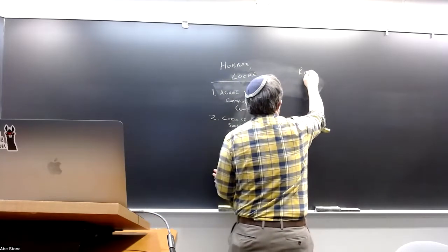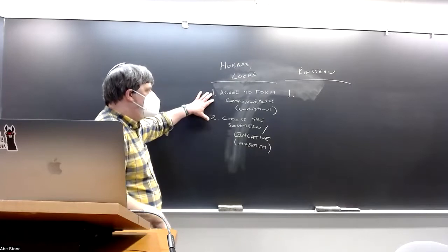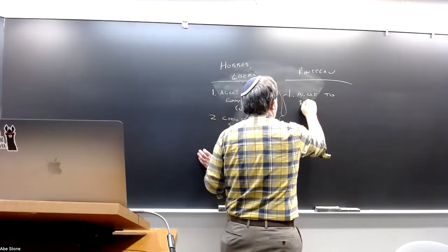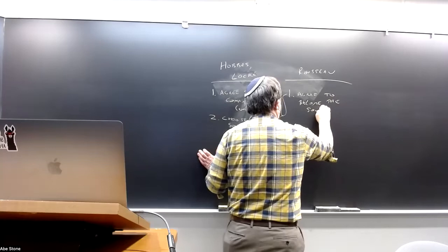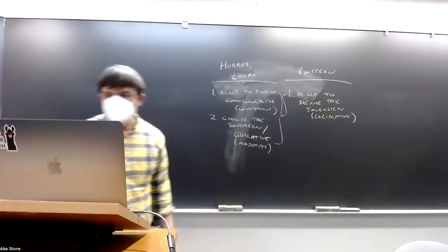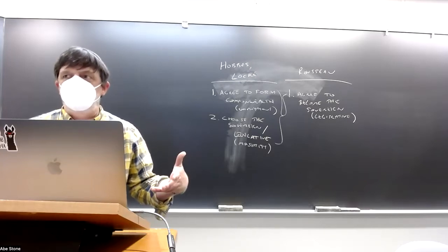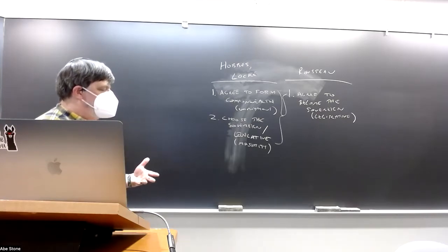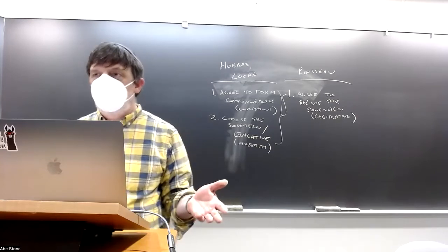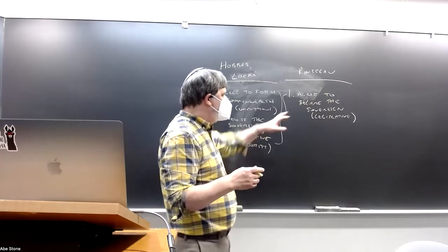Rousseau doesn't exactly have these two steps because they're both combined into one step. We can only agree to form a Commonwealth by agreeing to all together become the sovereign, that is the legislative. And as I was emphasizing last time, even though this is already kind of true in Locke — namely that the supreme power in the state only acts by means of laws — in Rousseau that's emphasized and made more consistent.